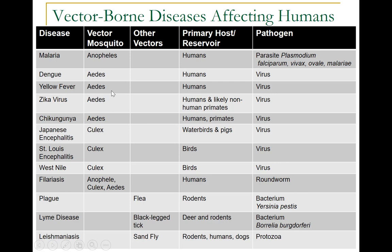The three mosquito types are Aedes aegypti, Culex, and Anopheles. For malaria the vector is Anopheles; for dengue, yellow fever, Zika, and chikungunya the vector is Aedes; and for Japanese encephalitis, St. Louis encephalitis, and West Nile the vector is Culex. Filariasis, which is a worm disease, can be spread by all three types of mosquitoes.